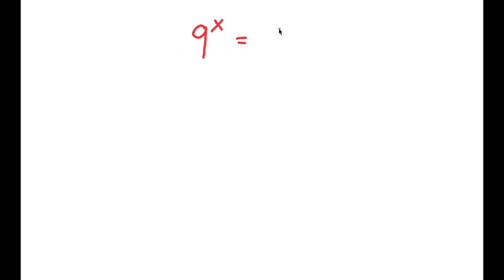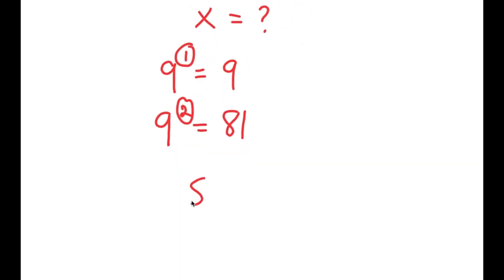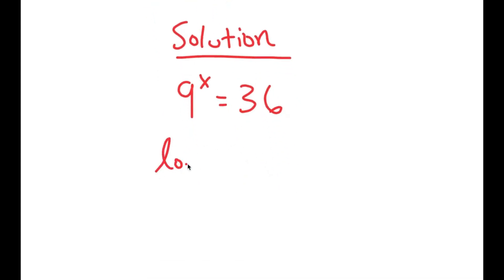In this equation I'm going to be solving 9 to the power of x is equal to 36. The variable is x, which is what I'm solving for. We can already tell that x is not going to be a whole number because 9 to the power of 1 is 9 and 9 to the power of 2 is 81, so x is going to be somewhere between 1 and 2. We want the exact value of x, so I'm first going to take the log on both sides: log of 9 to the power of x is equal to log 36.